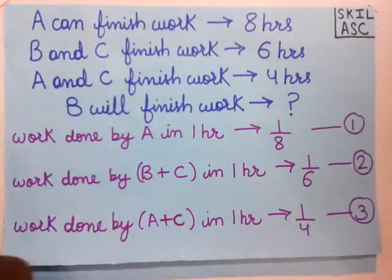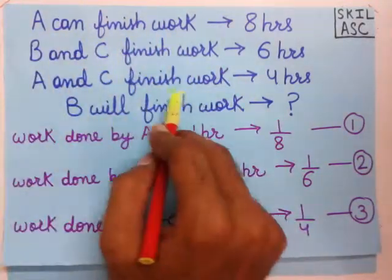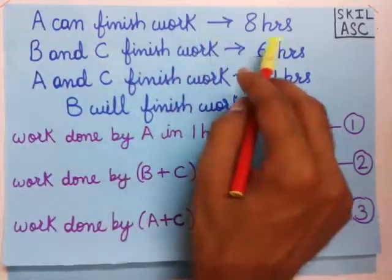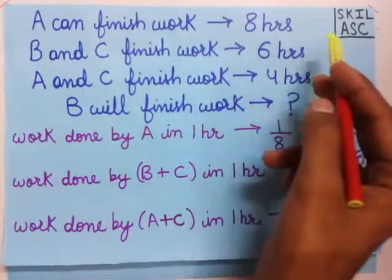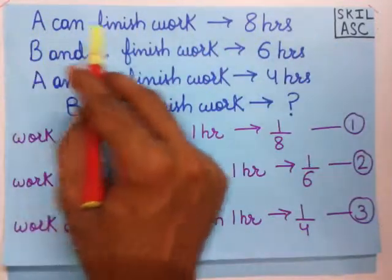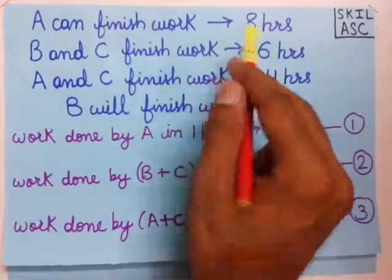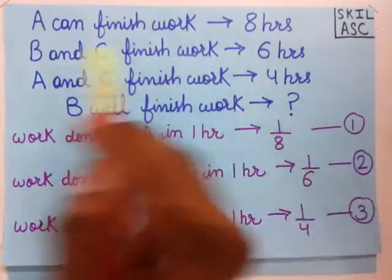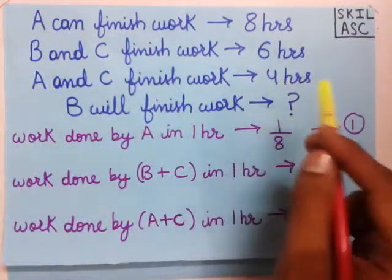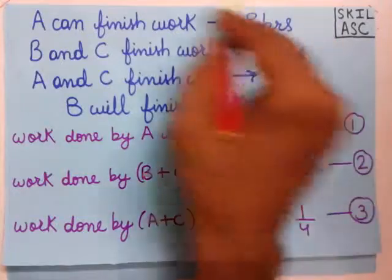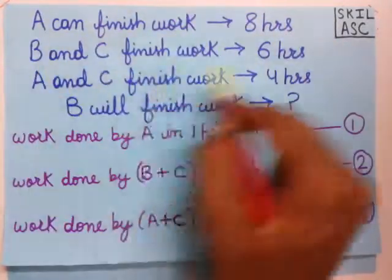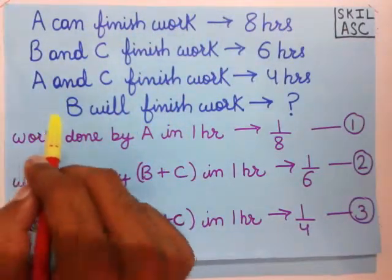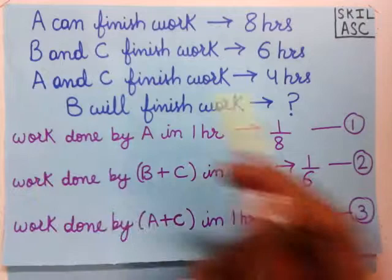Now notice these are three statements. The first statement is A can finish the work in 8 hours, the second statement is B and C together, and the third statement is A and C together. Using these three statements we have to find how long will B take to finish the work.